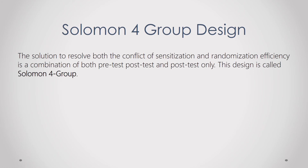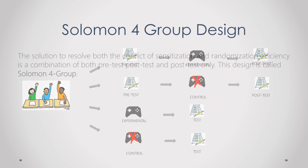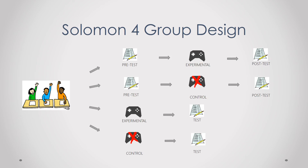The solution to resolve both sensitization and randomization issues is a combination of the pre-test post-test and post-test only designs — this is called the Solomon four group design. In this design, participants are divided into four groups: two groups receive a pre-test and two do not; there are two experimental groups and two control groups. In the end, the post-test conditions are assessed across all four groups.